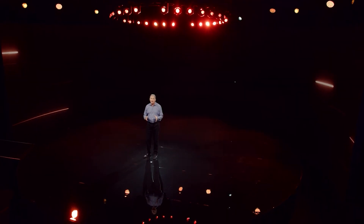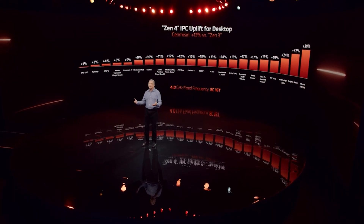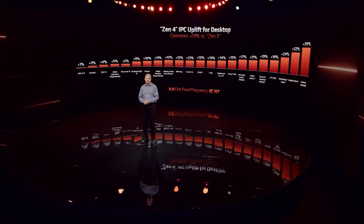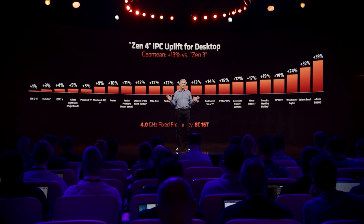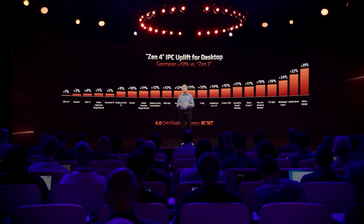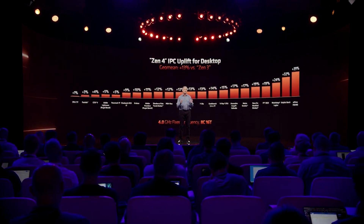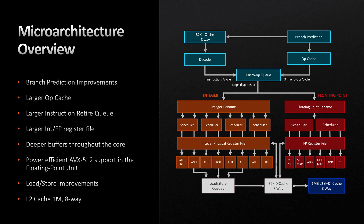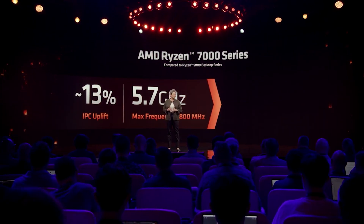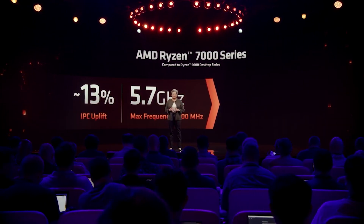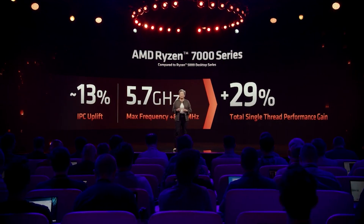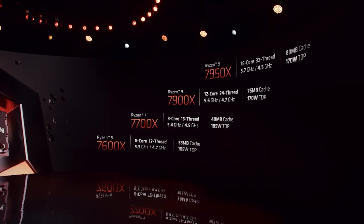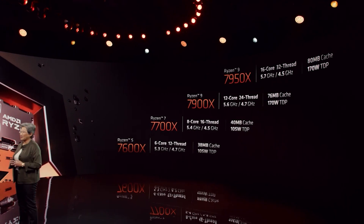Zen 5 is expected to deliver a big performance advantage over Zen 4, mostly through IPC improvements. There's a big architectural redesign, and clock frequencies remain pretty similar — potentially regressing slightly versus Ryzen 7000 — but the IPC uptick more than compensates. Core counts will probably scale to around the same numbers we see now, so 16 cores for the higher end, with the mid-range still to be determined.